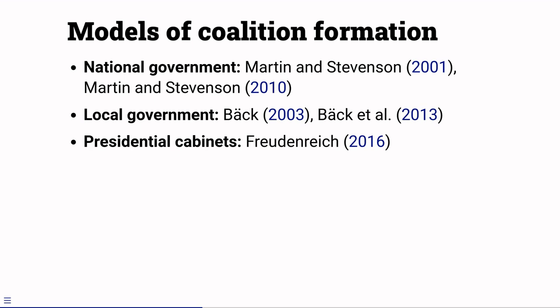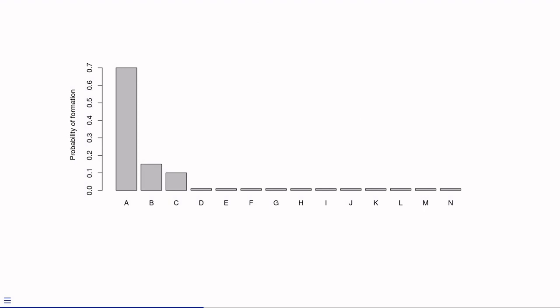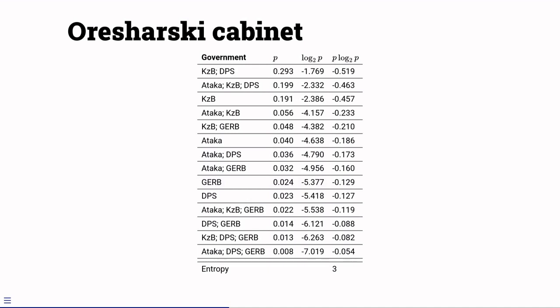Intuitively, where the model places high probability on one or a small number of possible coalitions forming, entropy is low and identifiability is high. Where the model derived probabilities are spread out amongst many possible governments, entropy is high and identifiability is low. Here is a worked example taken from the paper, which shows this for one particular coalition formation opportunity in Bulgaria. So far I've shown you that we can use models of coalition formation to calculate the entropy of coalition formation. And I've suggested that entropy can be used as a measure of government identifiability.